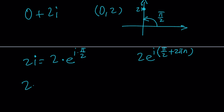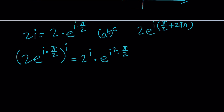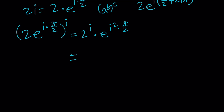Now we're going to raise this to the power i. When we do that, we get 2 to the power i, and then e to the power i squared times pi over 2. As you know, when we have something like a to the power b to the power c, the exponents are multiplied. So i squared is negative 1, so we get a real number from that part. Since i squared equals negative 1, this becomes e to the power negative pi over 2.